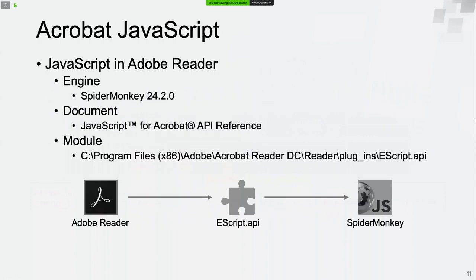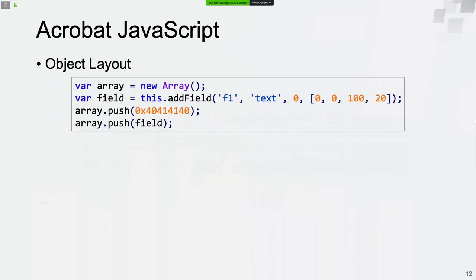Now, let's talk about JavaScript in Adobe Acrobat Reader. There is a file named isscript.api in the plugin folder of Adobe Acrobat Reader DC. It's the JavaScript engine, developed based on SpiderMonkey version 24.2. You can download the source code from Mozilla's FTP server. Also, you can download a document called JavaScript for Acrobat API Reference from Adobe's website. This file documents almost all JavaScript objects designed by Adobe.